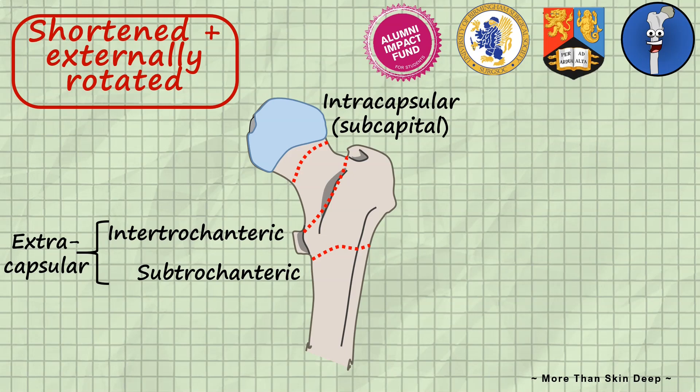The degree of dissociation of the two parts of the fracture can be defined using the garden classification system. Now, finally, let's cover the options available to fix fractures of the neck of femur.